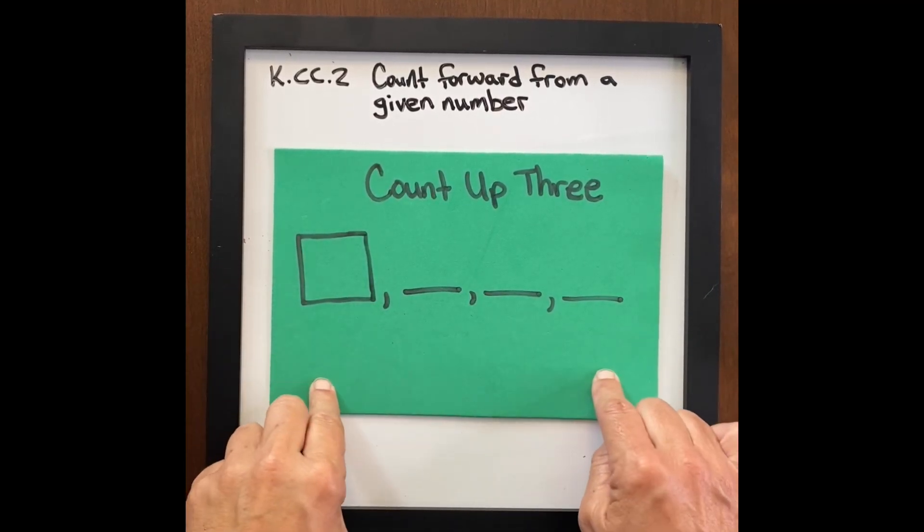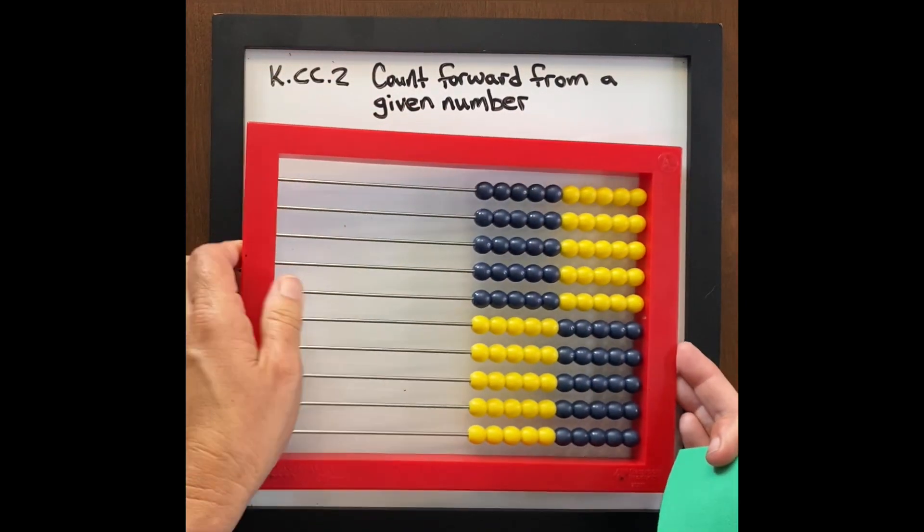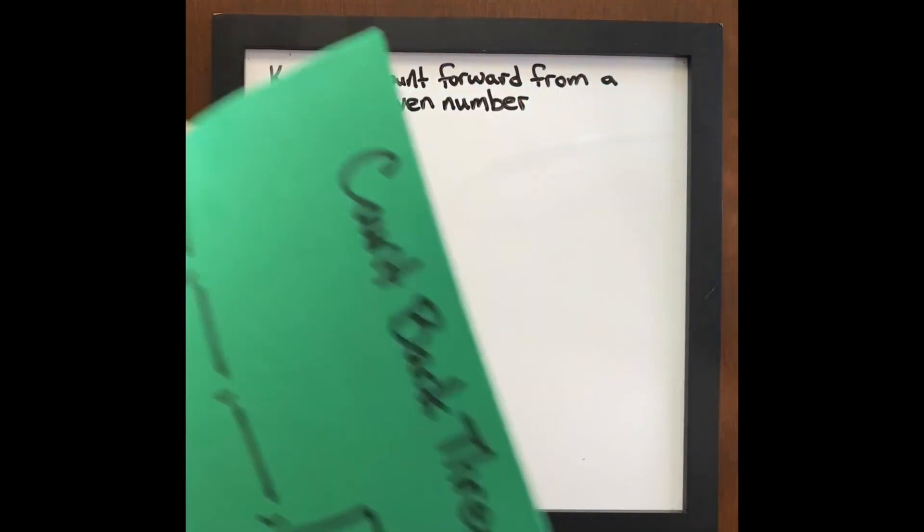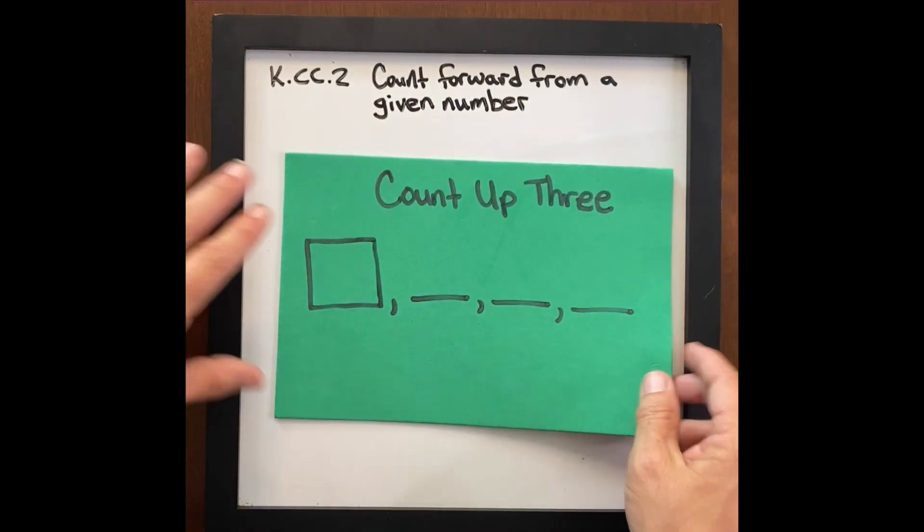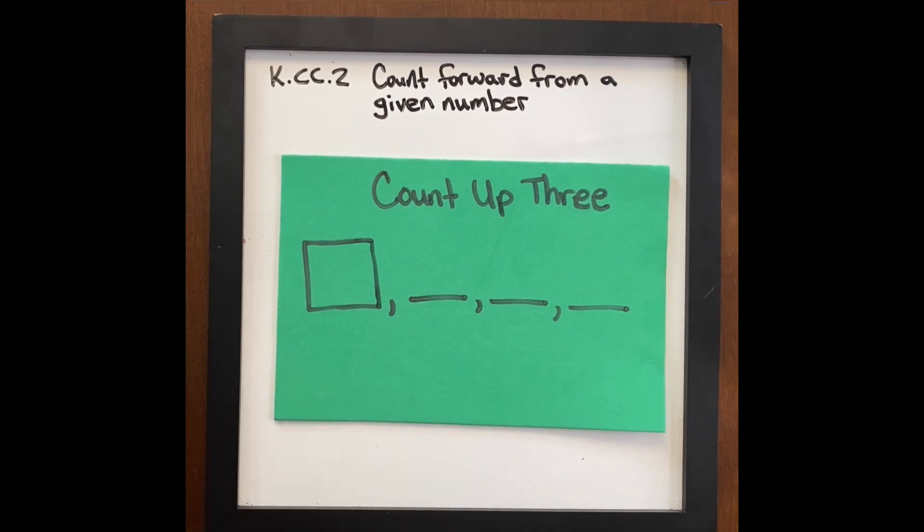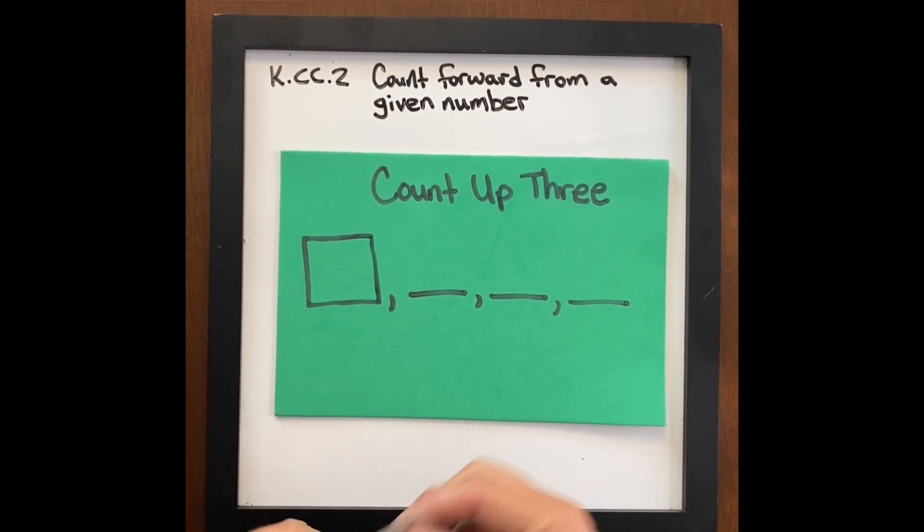Count forward from a given number. We are going to use the foam mats. We previously worked on using the abacus as conceptual understanding. Now we're going to turn that conceptual understanding and move it towards more of an abstract concept, but we're still going to scaffold a little bit because we will be using cards.